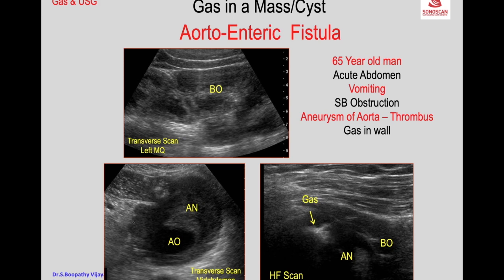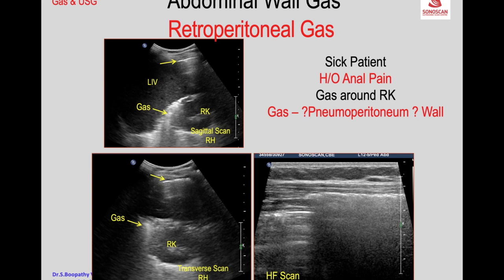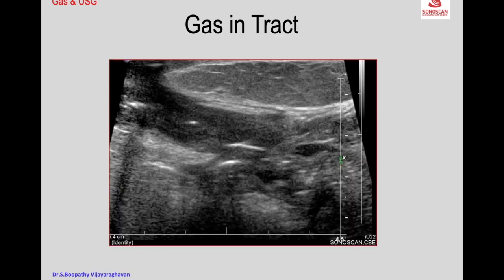That was gas in the wall of the aneurysm with a tract to the bowel. Anterior to the liver, the question is whether it is pneumoperitoneum or gas in the wall of the abdomen. You use high frequency and see gas in the left iliac fossa.